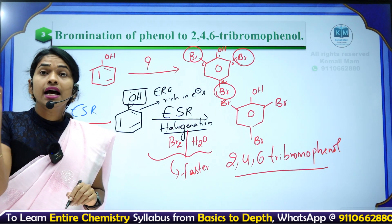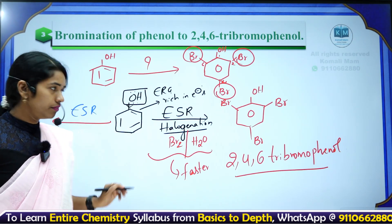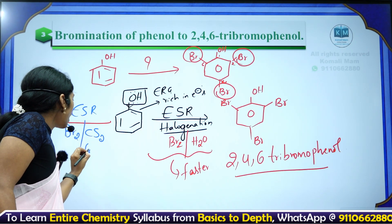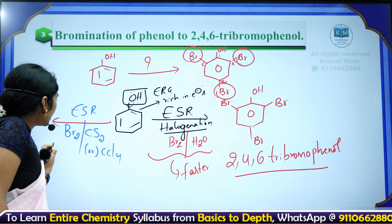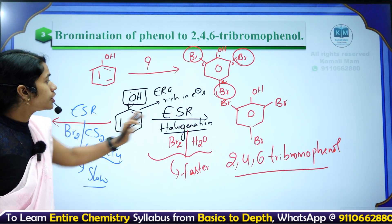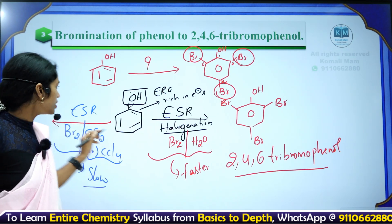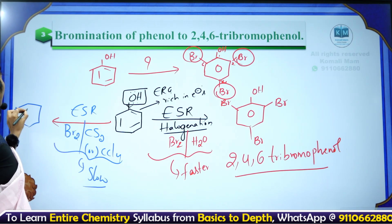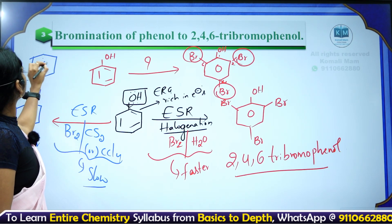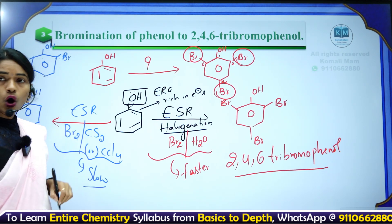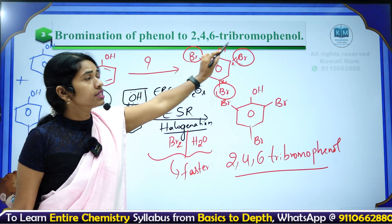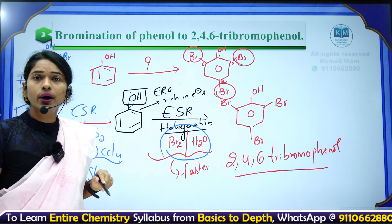If instead of a polar solvent you use a non-polar solvent like carbon disulfide (CS₂) or carbon tetrachloride (CCl₄), the halogenation reaction is slower. Instead of substituting all ortho and para positions, you get only one Br at the para position and one Br at the ortho position — two products. So for 2,4,6-tribromophenol, use bromine over water (Br₂/H₂O).